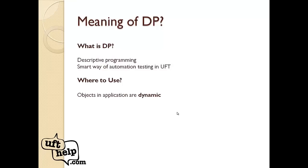Another scenario is when objects are generated at runtime — for example, clicking a button on a PDF that is generated at runtime where properties cannot be captured, so we use DP. Also, when our object repository size is increasing significantly, having a large OR degrades UFT performance, so we prefer DP instead.